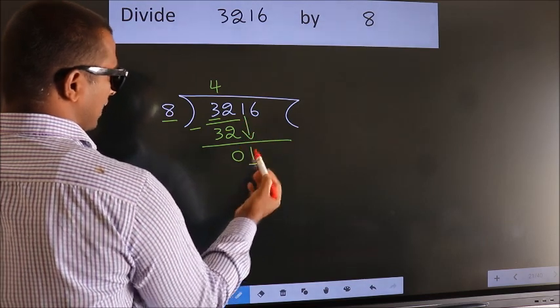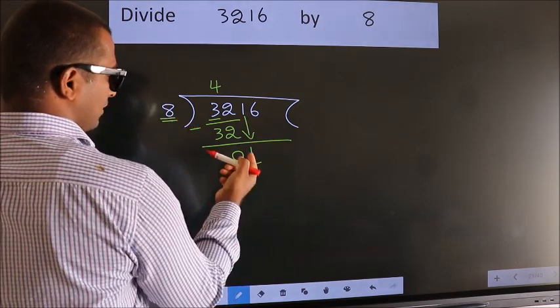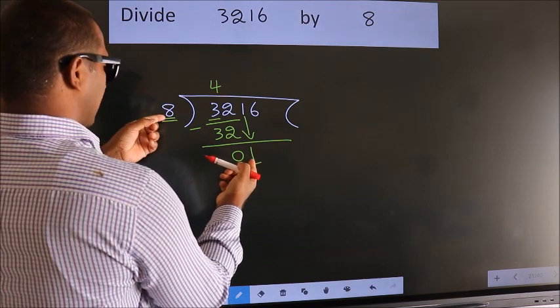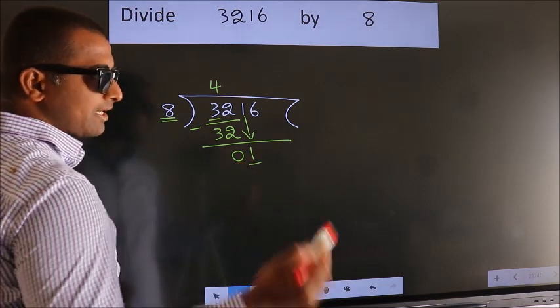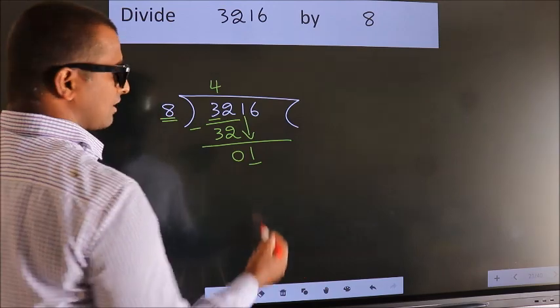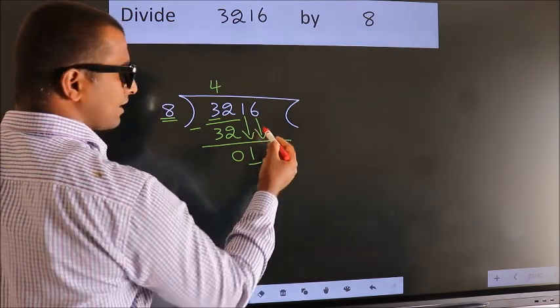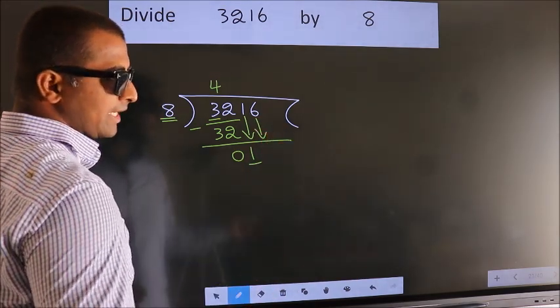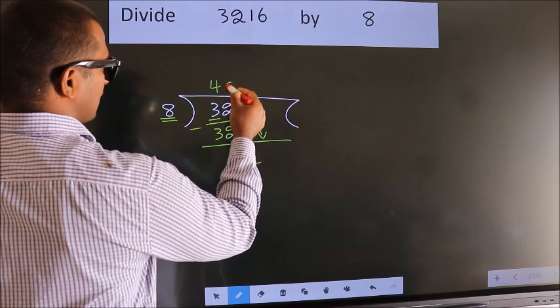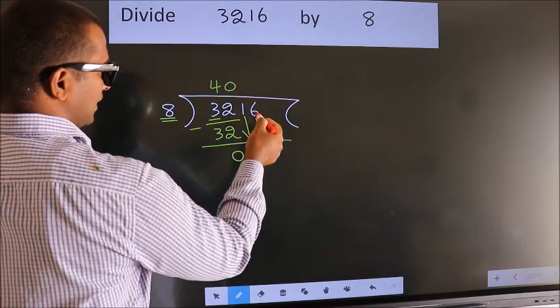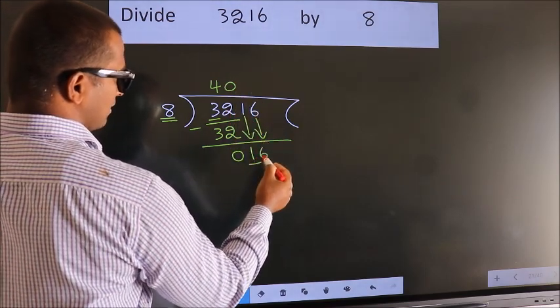Here we have 1. Here 8. 1 smaller than 8. So we should bring down the second number. And the rule to bring down second number is put 0 here. Then only we can bring down this number.